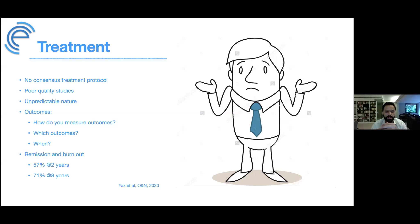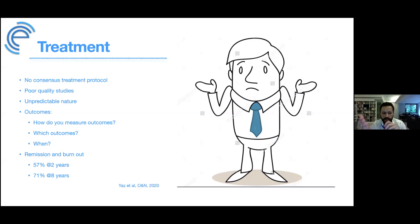Meniere's disease is also unpredictable in nature — a patient may have had an episode 20 years ago and another 10 years later, with nothing in the definition limiting the time period. They can have quiescent periods lasting months or years, making it difficult to judge treatment outcomes. Additionally, what outcomes do we measure — the vertigo, the imbalance, the hearing loss? And how do we measure them, subjectively or objectively?